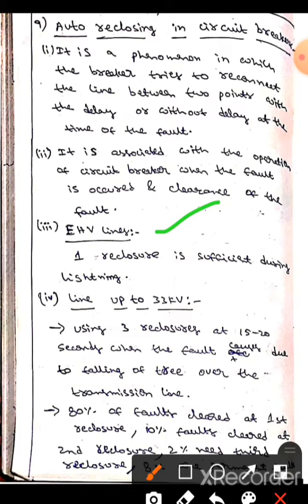In HV lines, one recloser is present during lightning. For lines up to 33 kV, we use three reclosers in order to clear the fault.